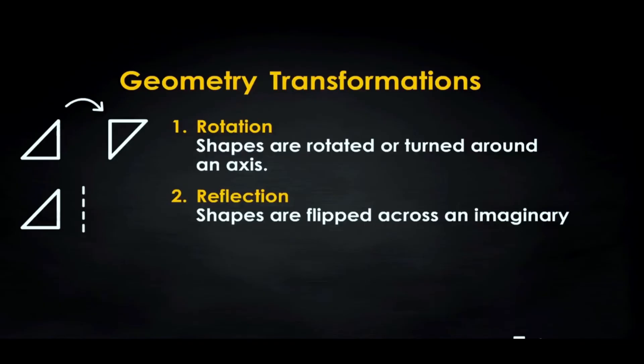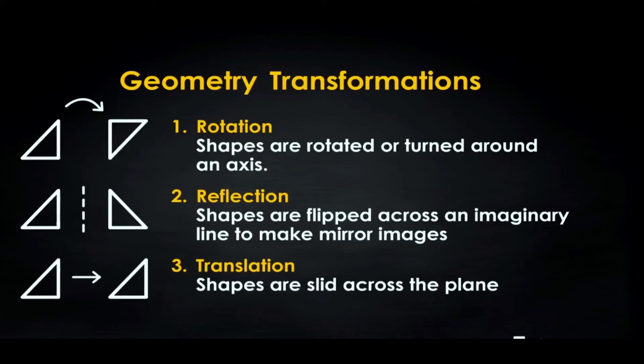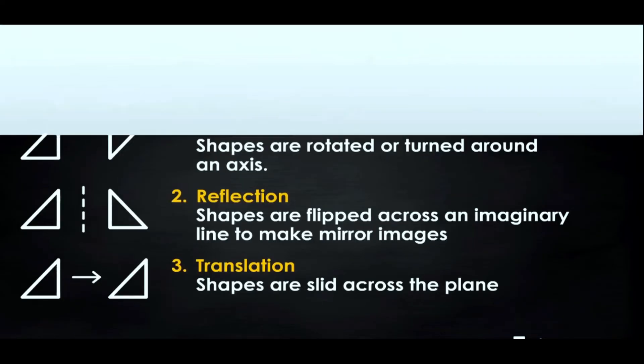2. Reflection. Shapes are flipped across an imaginary line to make mirror images. 3. Translation. Shapes are slid across the plane. You use all these concepts in everyday life. Let's check each out separately, starting with rotation.